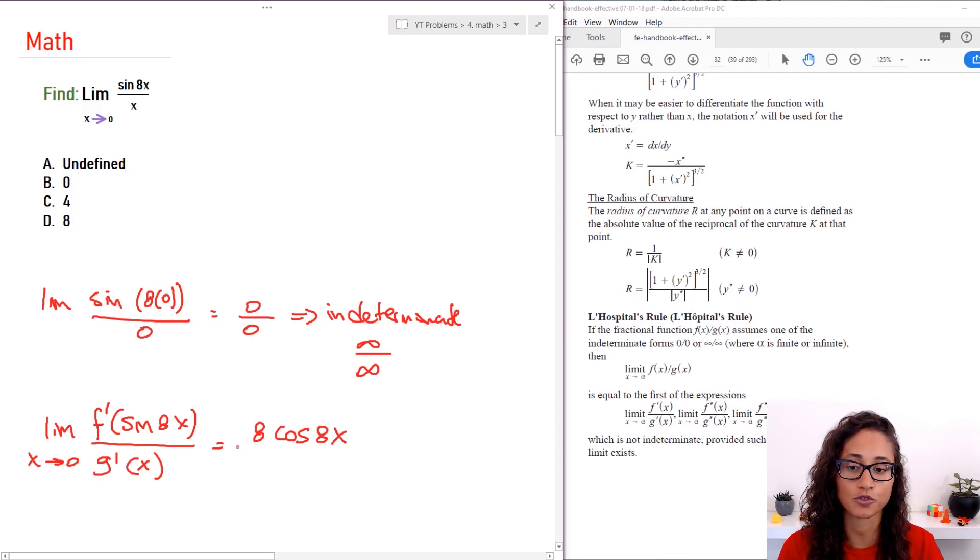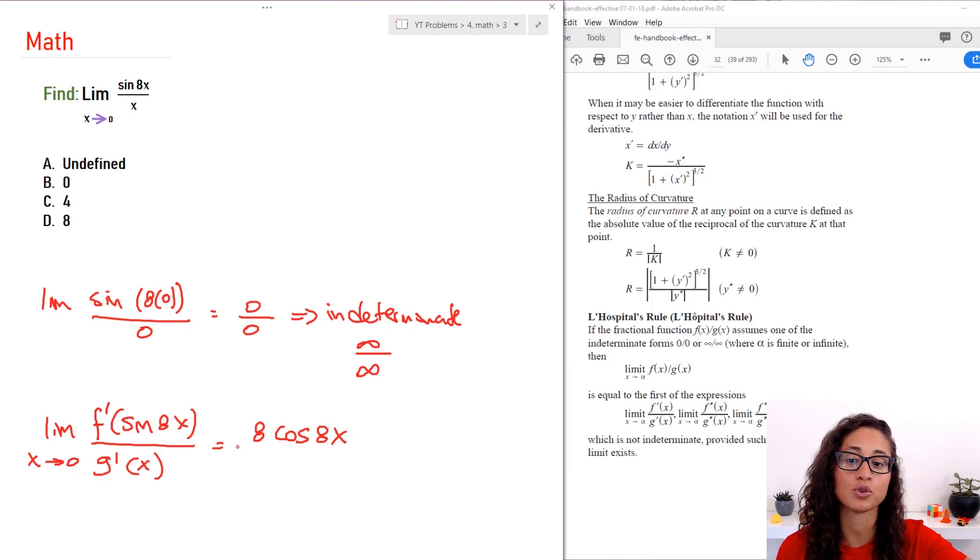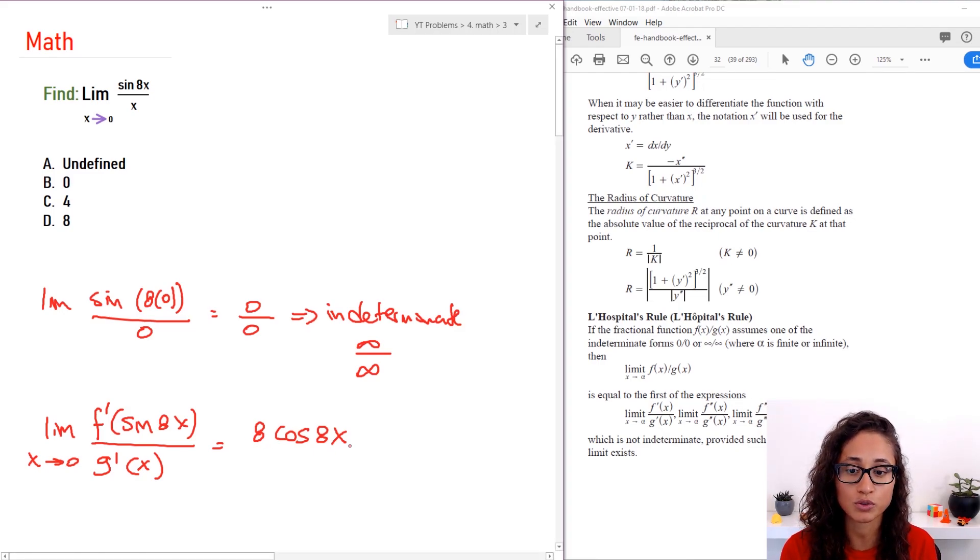It's like taking the derivative of sine first, so that will give you cosine 8x. But then you also have to do the derivative of 8x, which is 8. So that's the chain rule if you guys remember that. So this gives me 8 cosine 8x.